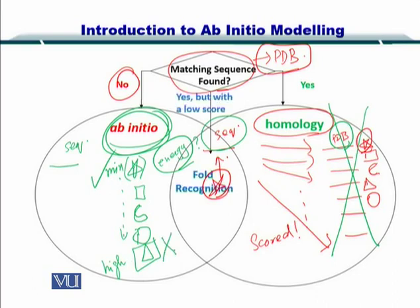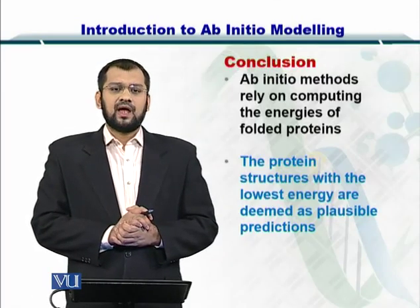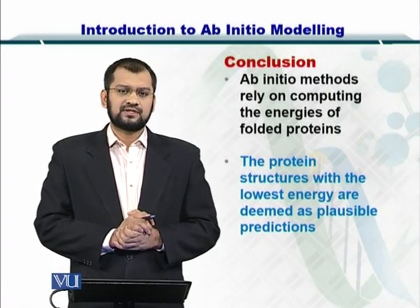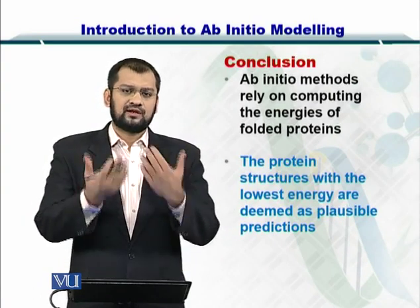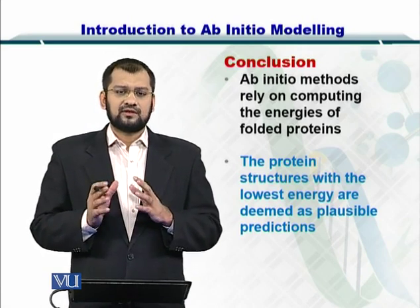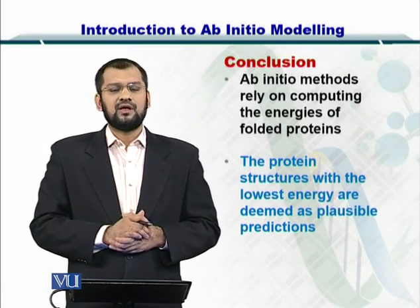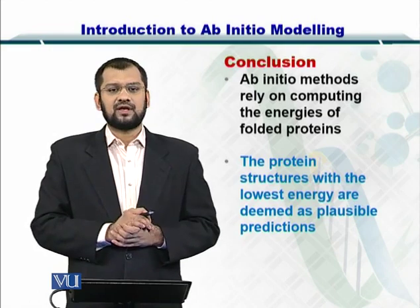Of course, there could also be a situation where you find something in the PDB but it has a low score, in which case you use fold recognition or threading. This is why ab initio modeling is quite useful for cases where you don't have the structure from the PDB. In conclusion, ab initio methods rely on computing the energy of structures, selecting the structure with the minimum energy, and then assessing its plausibility in the biological context — because ab initio methods can predict a structure that does not have a biological meaning.